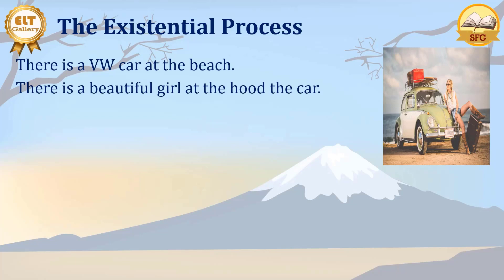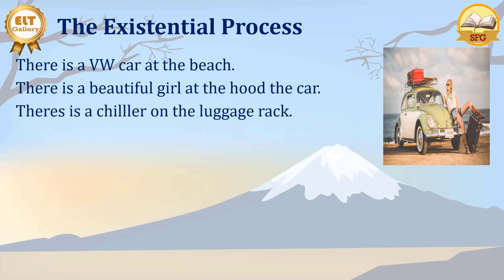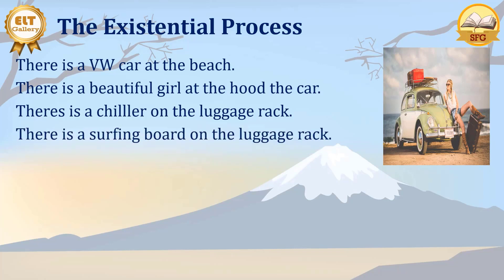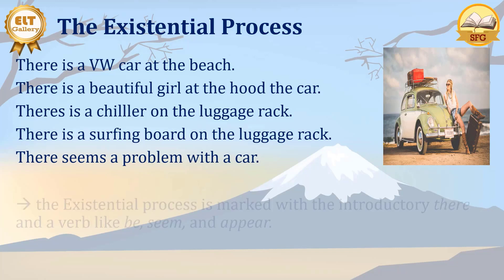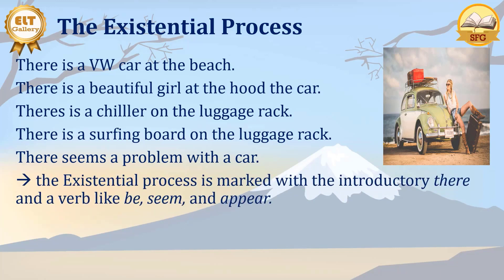There is a beautiful girl on the hood of the car. There is a surfing board on the luggage rack. There seems a problem with the car — the car stopped, probably she just wants to enjoy her time. Here we have existential processes. The existential process is marked with the introductory 'there,' and then we have a verb like 'be,' 'seem,' and 'appear.' What we say here is that there exists something. We have 'be' or 'seem' or 'appear' or similar linking verbs. That's the existential process.